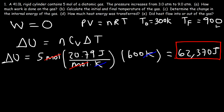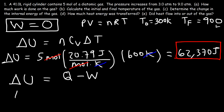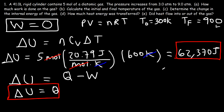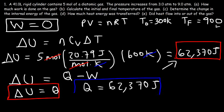Now part D: how much heat energy was transferred? Using the first law of thermodynamics, ΔU = Q − W. Because W = 0, ΔU must equal Q. This equation is always true for an isochoric process — the change in internal energy equals the heat energy that flows into or out of the system. Since ΔU is 62,370 joules, Q equals 62,370 joules. That's the answer for part D.